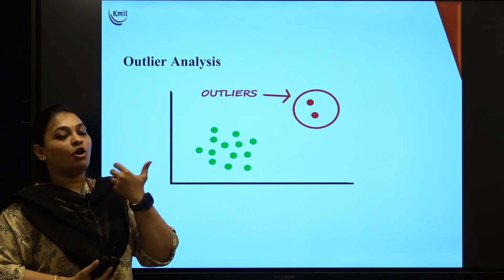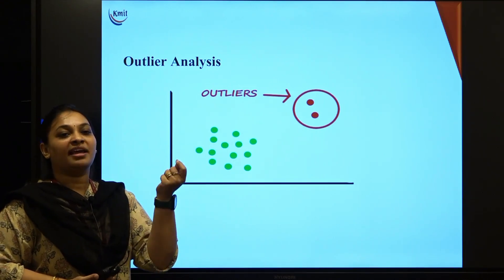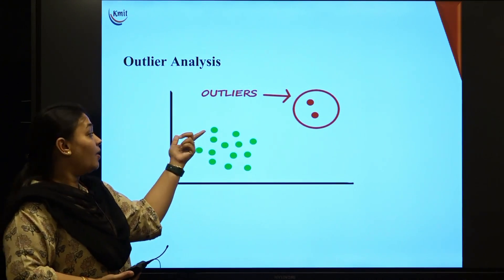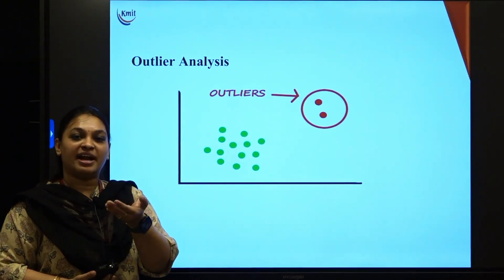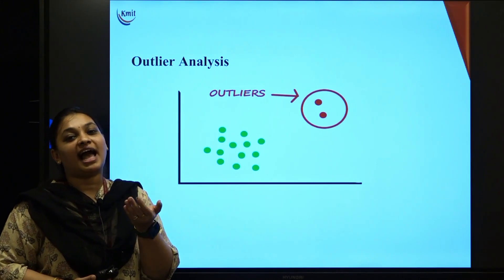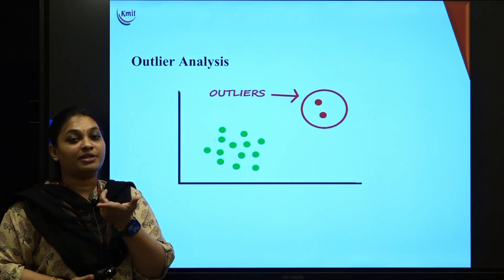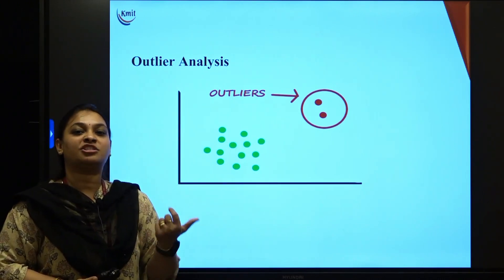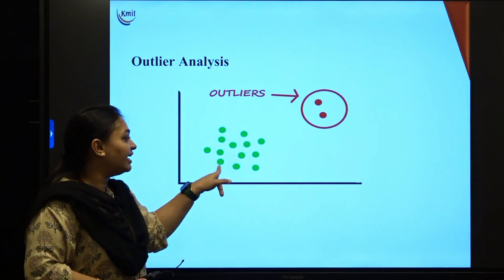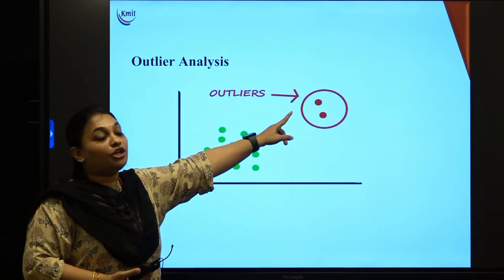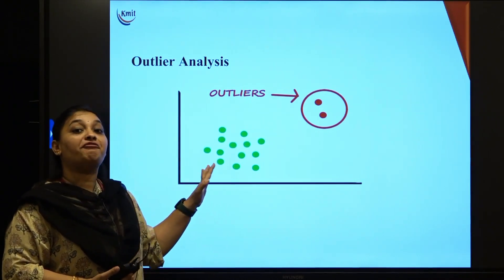Next is outlier analysis — also called anomaly analysis. An anomaly is when you have everything the same but one small thing is out of place. For example, a student entity has student ID, name, and age as attributes — if you directly add a student salary, it has no relation to student information; that is an anomaly. In a dataset, if all data points are green but two are red, those two are called outliers.